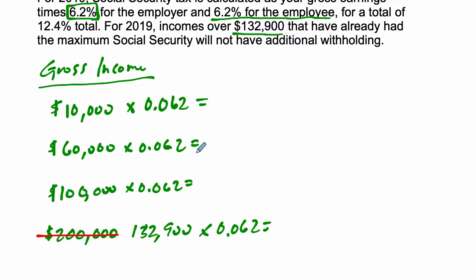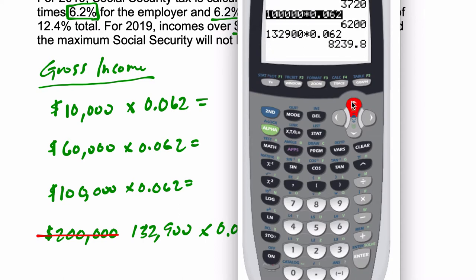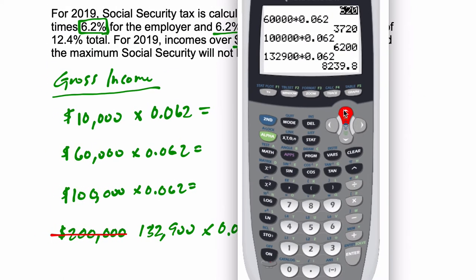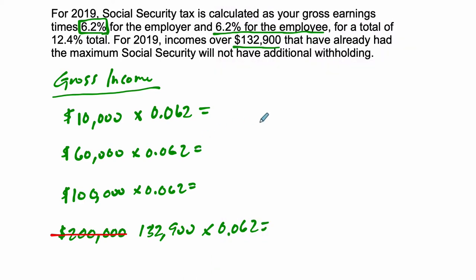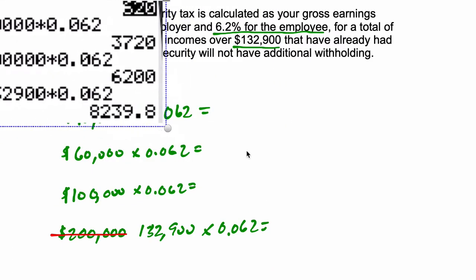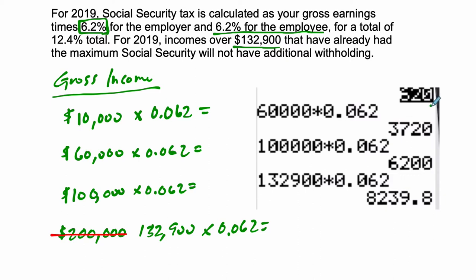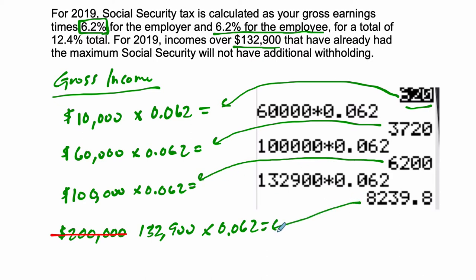Another question you might answer from each of these — let me just copy and paste those in there. I'll move up a little bit here just so we can get all those numbers in at once. So the first answer was $620, all the way down to $8,239. So $620 belongs here, $3,720 here, $6,200 here, and $8,239 there.